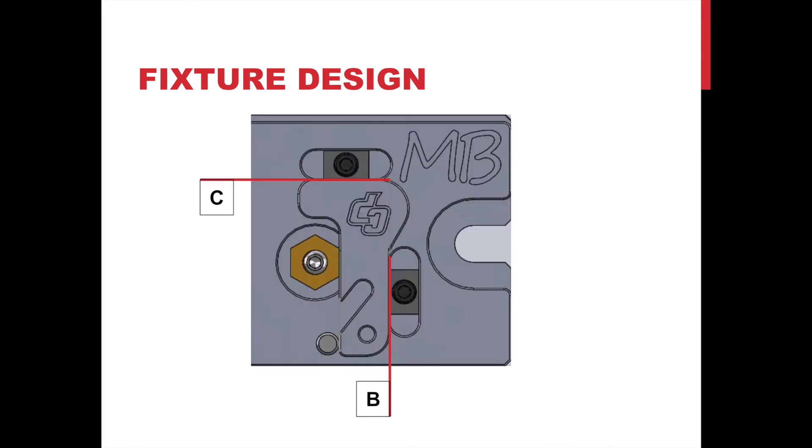This is a close-up view of how the part will be mounted for operation two on the fixture. Datum A was the primary surface and is the top surface of the fixture. The secondary and tertiary datums B and C, as shown on the part drawings, derived the locations of the locating rails and dowments.